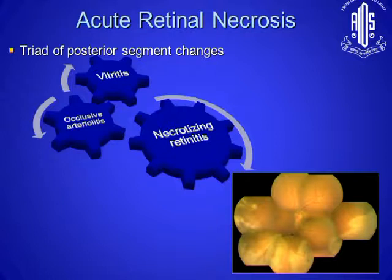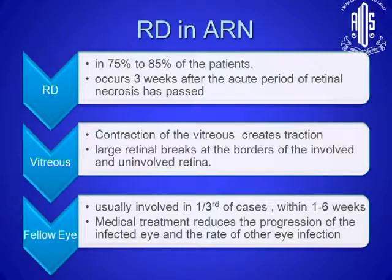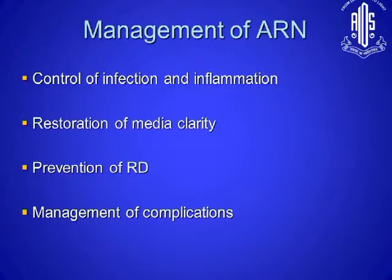Usually we see retinal detachment within three weeks in almost three-fourths of the patients, due to the contraction of the vitreous causing traction and retinal breaks in the borders of the uninvolved retina. If you don't treat the patients medically, there is a very high chance of progression to involve the posterior retina as well as the other eye. The management of ARN basically involves controlling the infection and inflammation, which is a major problem for all the complications that you see.